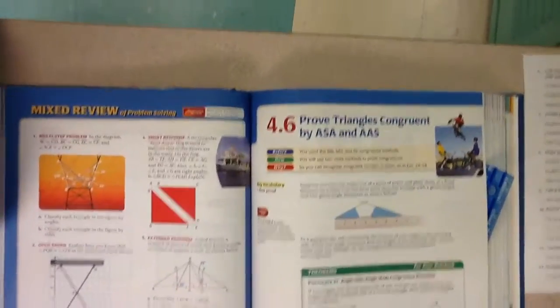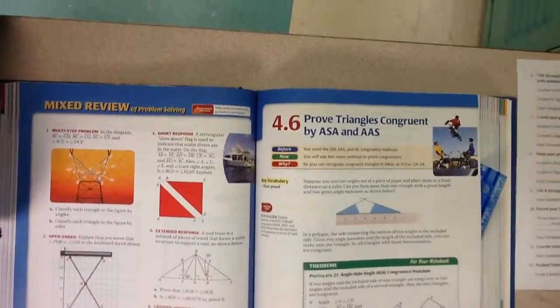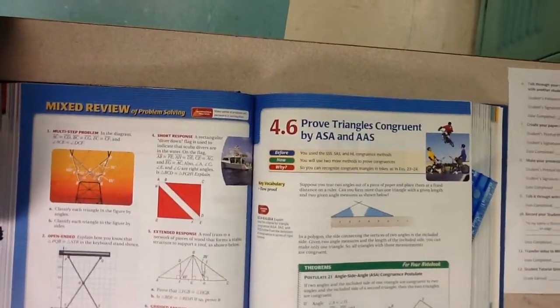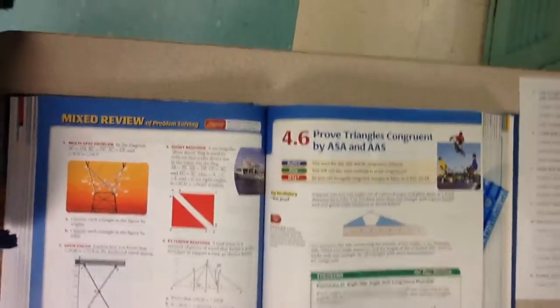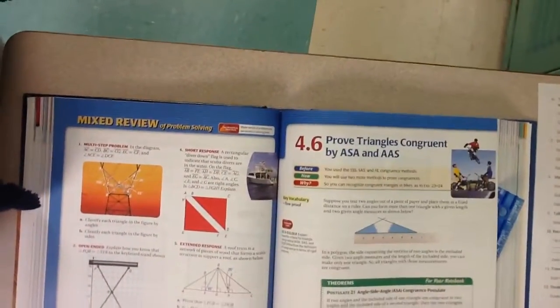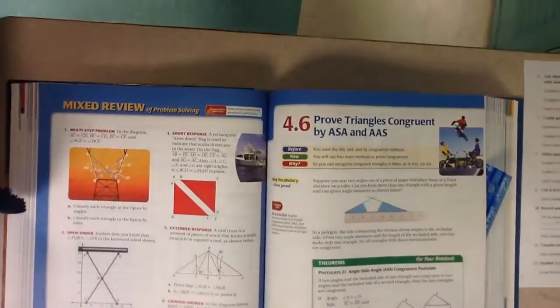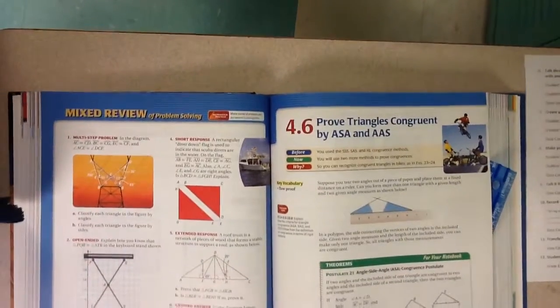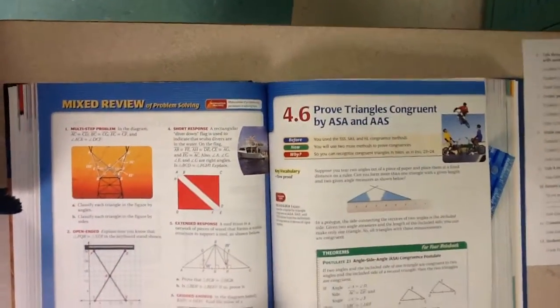Hi, my name is Nakenji, and this is problem number 27 on page 252, which is about proving triangles congruent by SAA and AAS, Section 4.6.